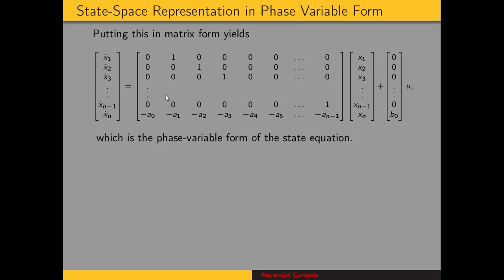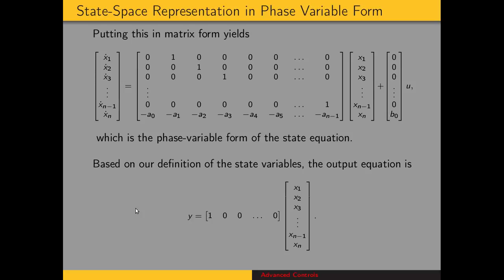We can put this into matrix form, and it's always going to look like this, where we have ones just off the diagonal and the bottom row is the negative coefficients. The output equation is the second part of our state space representation. Since we defined state variables as the phase variables — the output and its n minus 1 derivatives — the output is just x_1 by definition. So this gives us the output equation.